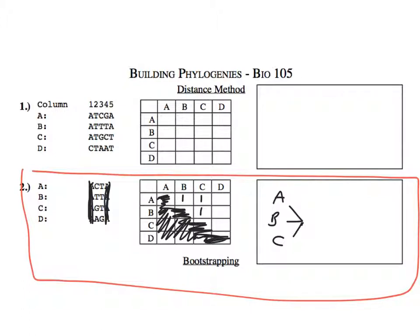Now it's a little bit easier to see the distance from A to D: C and T to A and G — there's no similarity there. Two changes, so two differences. The same is true for B to D. So where are we going to put D in this tree to make it equally distant from A, B, and C? It's going to connect to the central node, and then you put it out to the side.